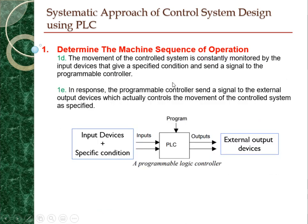The movement of the control system is constantly monitored by the input devices, which give a specific condition and send this signal to the programmable controller. In response, the programmable controller sends signals to the external output devices, which control the movement of the control system as specified by the external system.